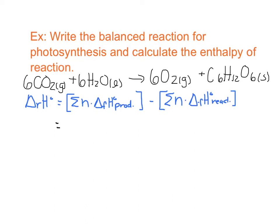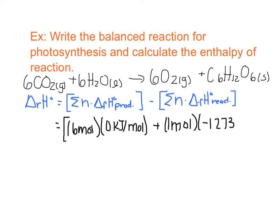If we start with a product, we're going to start with oxygen. Remember, oxygen has six moles, but its molar enthalpy of formation is zero kilojoules per mole because it's an element. Plus, because it's the sum, times one mole of glucose, which has a molar enthalpy of formation of negative 1,273.3 kilojoules per mole.